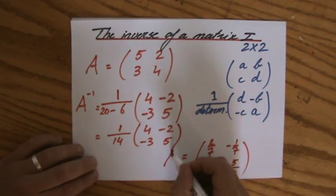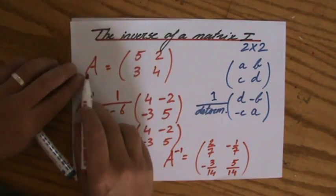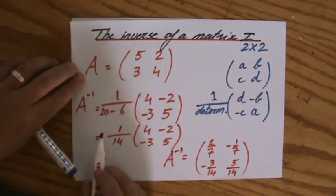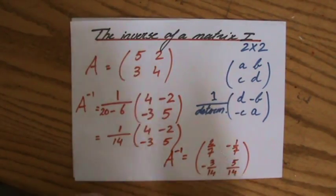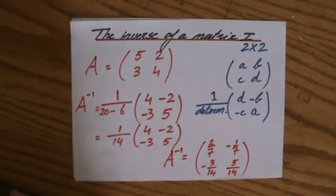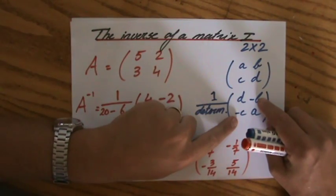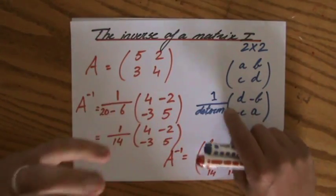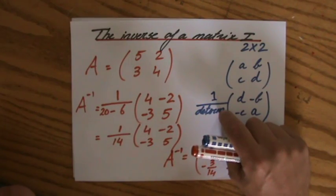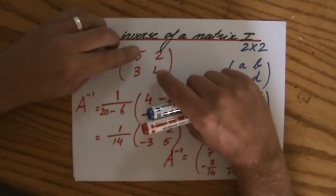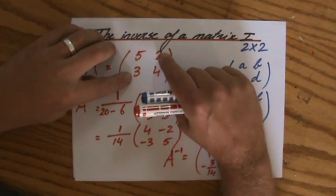So, the inverse of the matrix A, a 2 by 2 matrix, is going to look like that. And how do you find that? Again, you swap A and D, change the signs of B and C, and you have to multiply that by 1 over the determinant. And the determinant is AD minus BC.